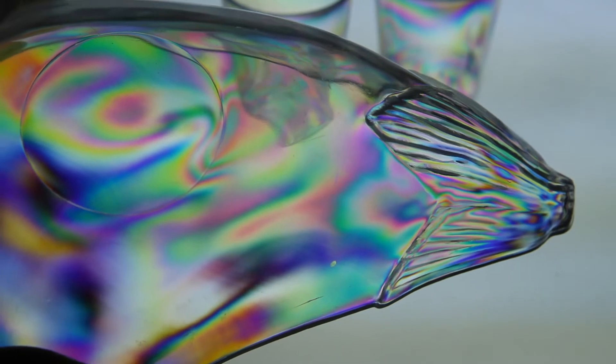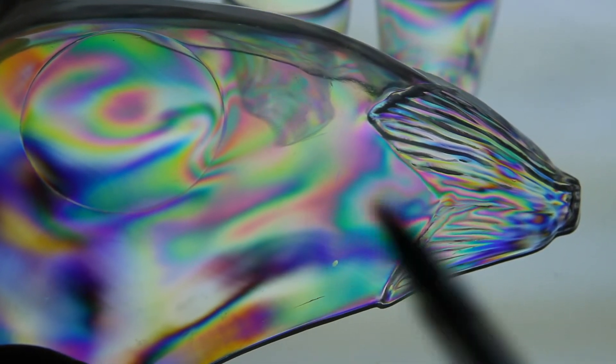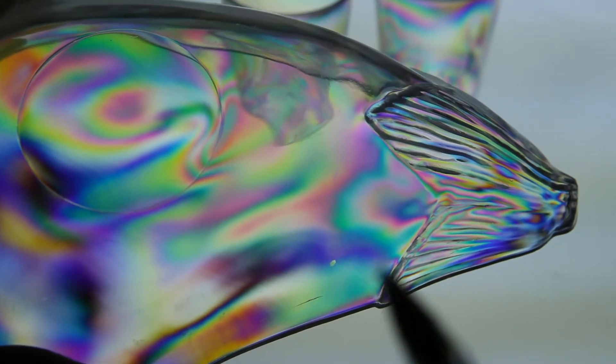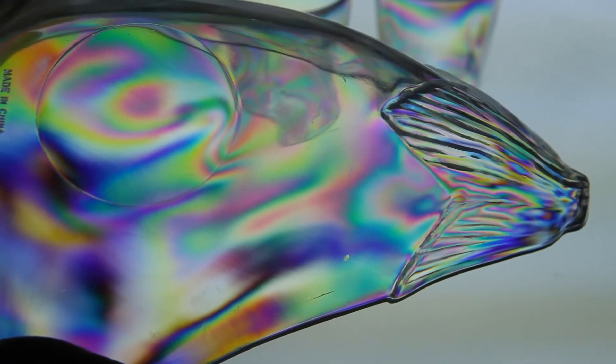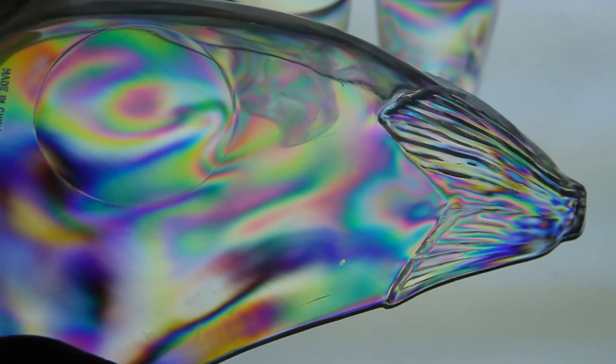And you can see where the areas of colour are close together, like here, and here, and here, there are areas of high stress. So that's where the object is likely to break in use.